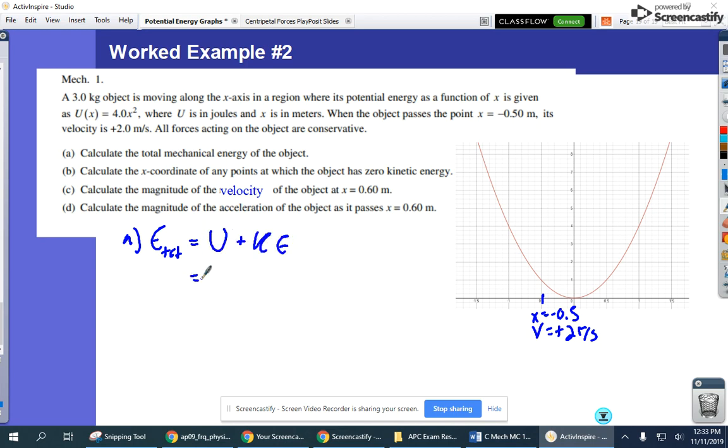we know that our total energy is going to be potential plus kinetic. Our potential energy, well, we know where we are. So our potential energy would be 4 times negative 0.5 meters squared, because, again, we know our function. We know our kinetic energy. 1 half times 3 kilograms times 2 squared. So let's see. This is going to be 1 joule,